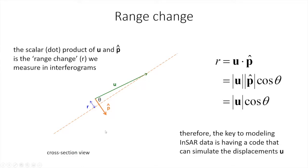Most of what we're going to talk about today is how we make this measurement of range change using InSAR, but for the purposes of modeling we're going to assume that we have some means of making a displacement field — making these vectors U using some kind of theoretical modeling software. The key to modeling InSAR data is being able to produce these vectors U and then being able to project them into the satellite line of sight.